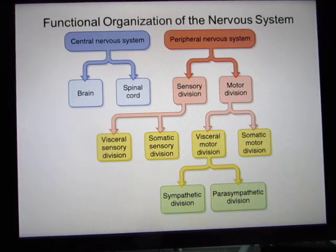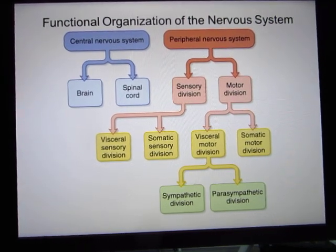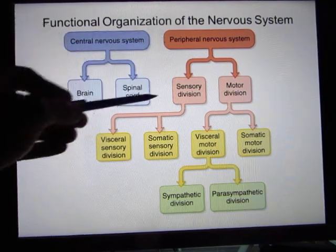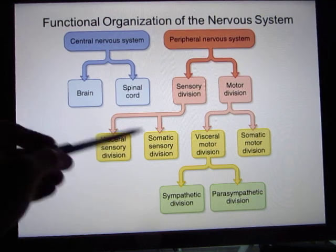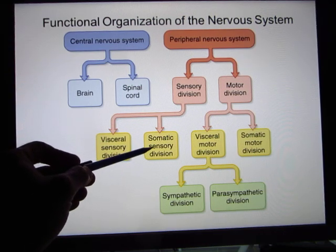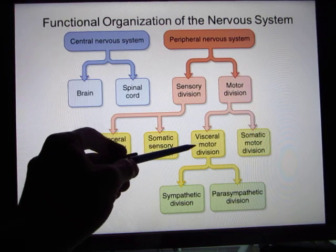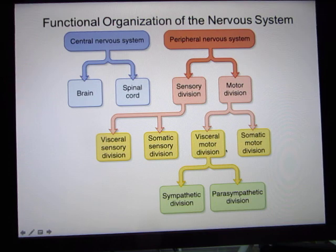A similar slide shows the same organization. The central nervous system includes the brain and spinal cord. The peripheral nervous system has a sensory division with visceral sense from inside the body and somatic sensory from the outside. The motor division includes visceral motor controlling inner body organs and somatic motor controlling your skeletal muscle.